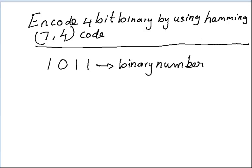Today I'm going to show how to encode a four-bit binary number by using Hamming code. If we want to encode a four-bit binary number, there will be seven bits in the encoded result, so we need three extra parity bits to encode. Now, how can we find out those three parity bits?